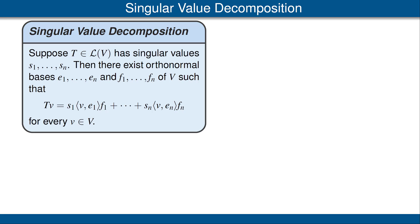Now we're ready to state the singular value decomposition. This is one of the big, important theorems of linear algebra. Suppose T is an operator on V with singular values s1 up to sn. The singular value decomposition states that there exist orthonormal bases e1 up to en and f1 up to fn, such that T of v has the beautiful, simple form shown here. Note that we have two orthonormal bases, e1 up to en and f1 up to fn, and we cannot necessarily take these bases to be the same.